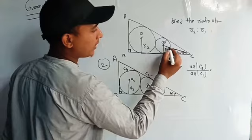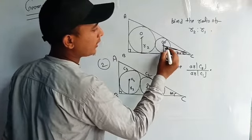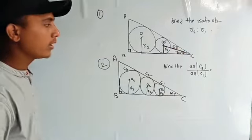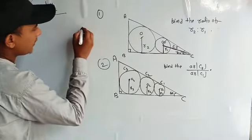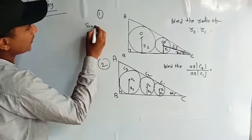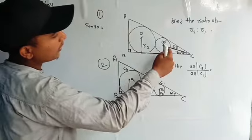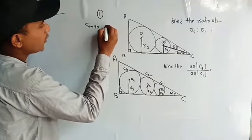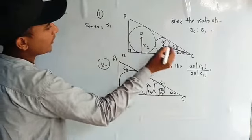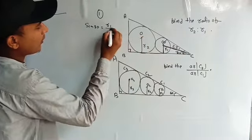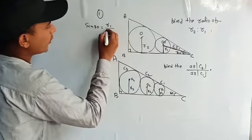So if it is R, then how much will it be? If I take sine, then sine is 30. Then sine is 30 degrees. Then H will be H. So if P is R1, then H will be O.